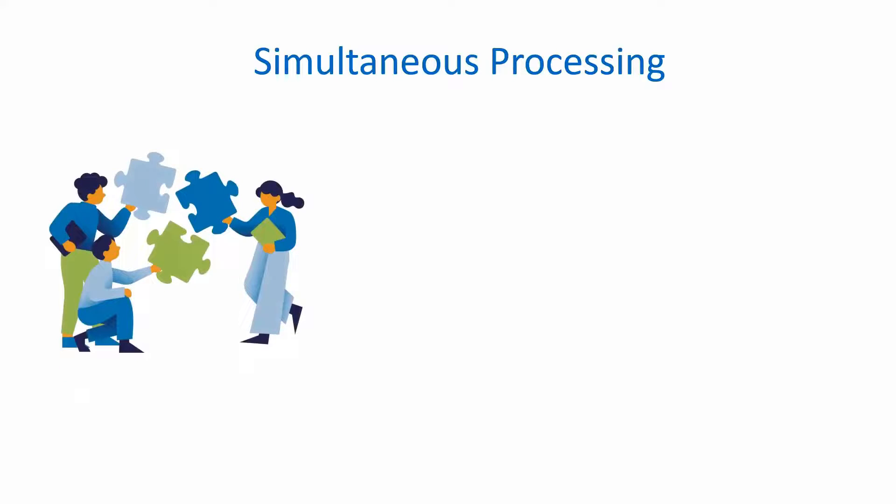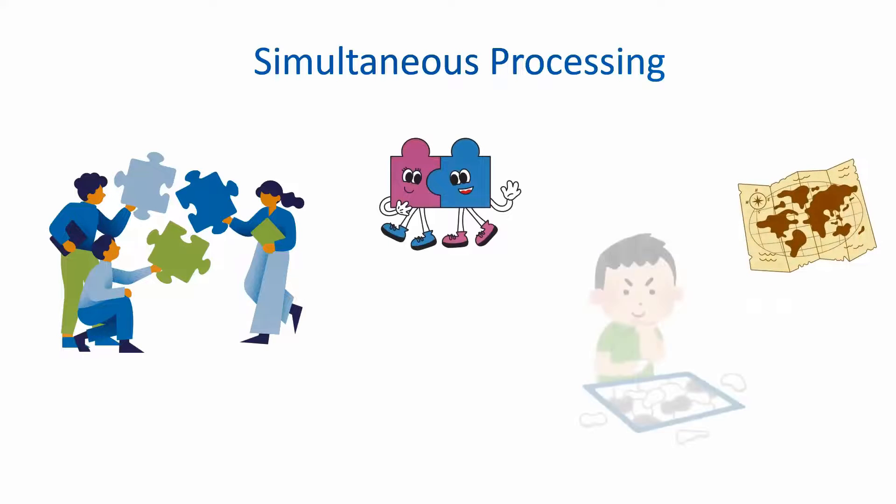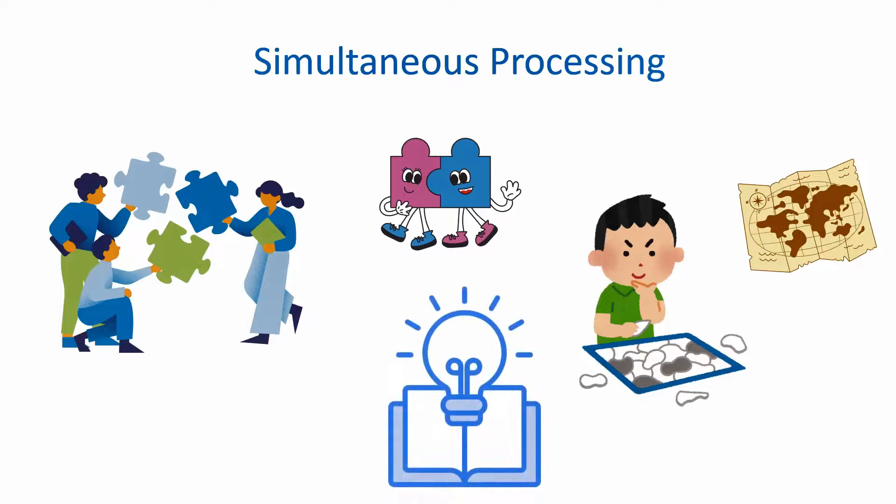Simultaneous processing is about putting together multiple pieces of information to understand their patterns or relationships. For instance, when you look at a map or solve a puzzle, you're using simultaneous processing to see how different parts fit together to form a whole picture. Simultaneous processing is used to integrate different parts into a whole or complete picture.